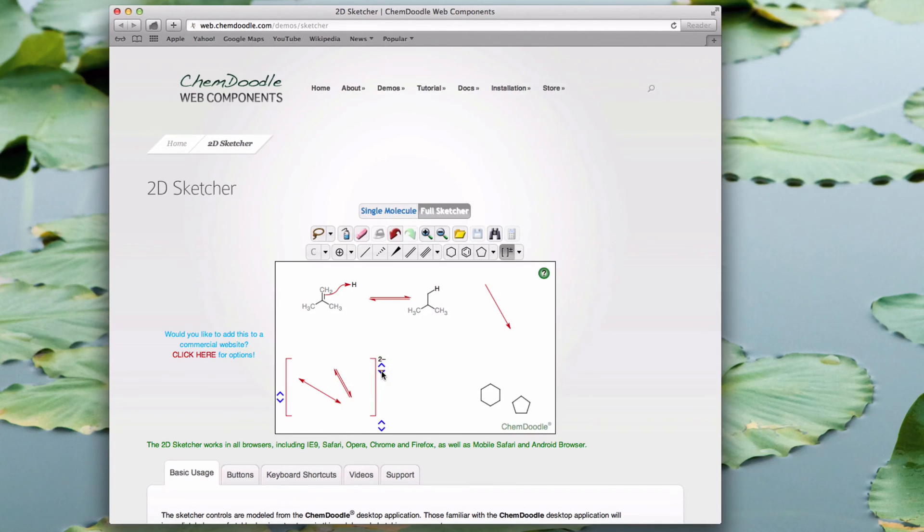The top right number is used to specify charge. The centre left number is great for reactions when you need to specify multiplicity. And the bottom right number is a repeat count. It's typically used for polymers.